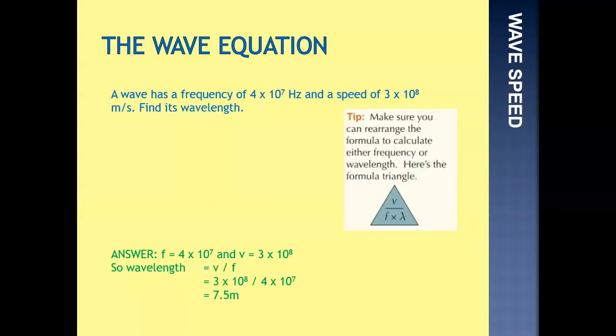A wave with a frequency of 4 times 10 to the 7 hertz, and a speed of 3 times 10 to the 8 meters per second, find the wavelength. Just on the right there is your formula triangle. You might want to pause the video and copy that down, so if you're asked to calculate frequency, wavelength, or speed, you can cover that one up and know what the equation is. In this case, we're looking for wavelength, so that would be speed divided by frequency.